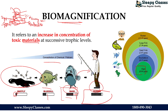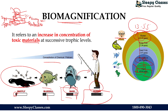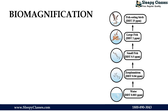If we look at the aquatic ecosystem here, in algae the concentration is 0.04 ppm. If plankton consumes algae, it becomes 0.23 ppm. And in the same way, at the highest trophic level — humans — the concentration is 13.55 ppm. So the concentration of toxic chemicals increases in this way.